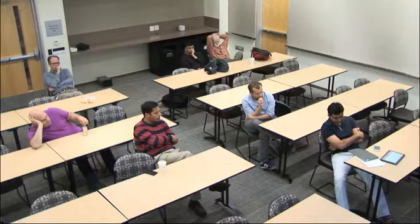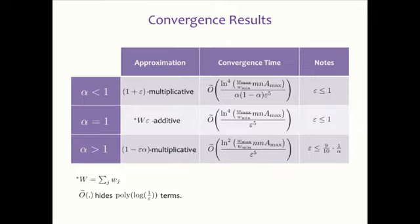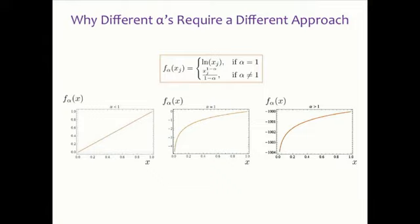For alpha less than one, the approximation is one plus epsilon multiplicative. For alpha equals one, the additive gap is the sum of weights times epsilon. For alpha greater than one, the objective is always negative, so the approximation is one minus epsilon multiplicative. Looking at the objective functions for different values of alpha explains why there are three separate proofs: alpha equals zero gives a linear function; as alpha increases to one, the function becomes more curved with a larger gradient near zero; for alpha greater than one, the function becomes increasingly steep — at alpha equals 100 it almost looks like a step function.